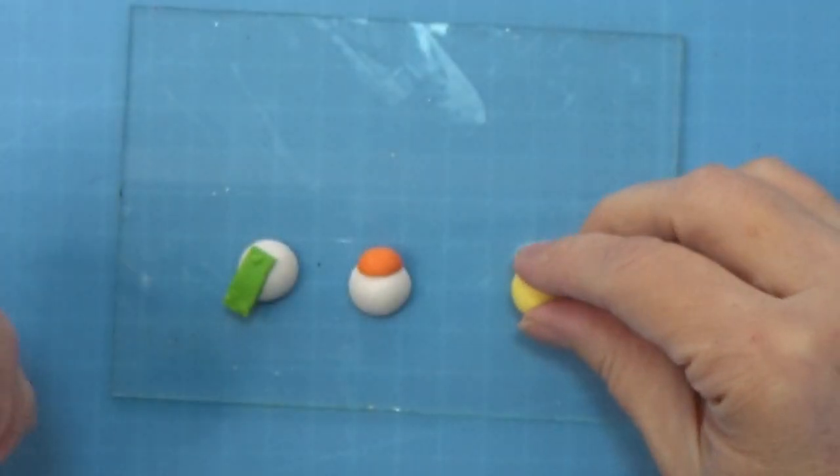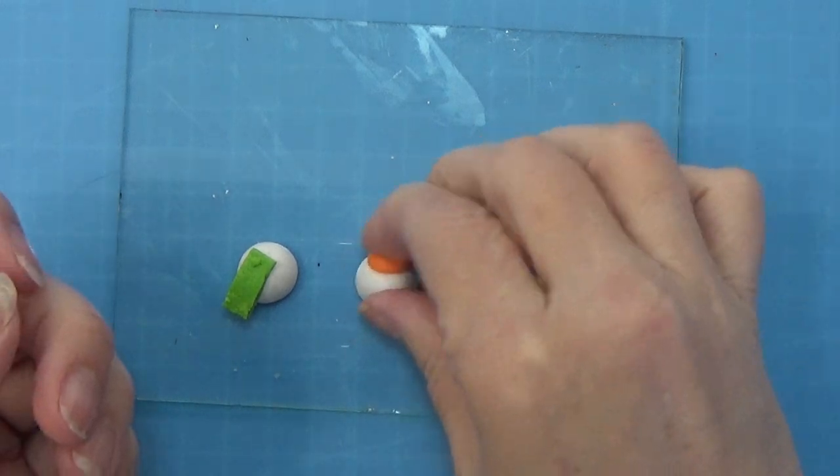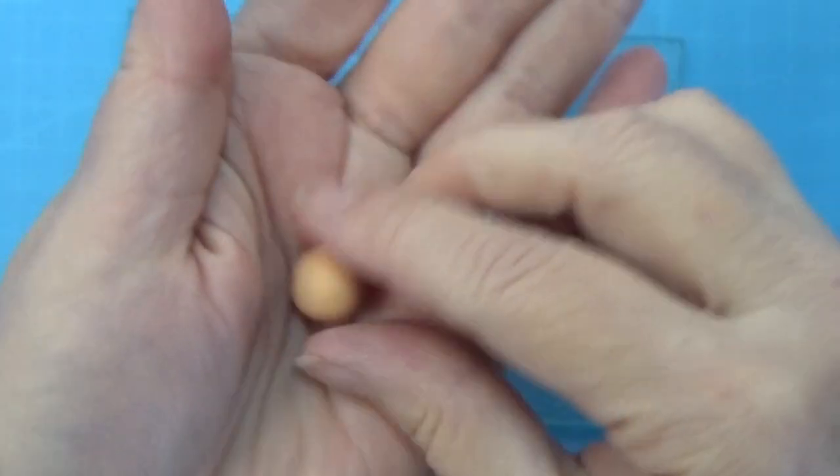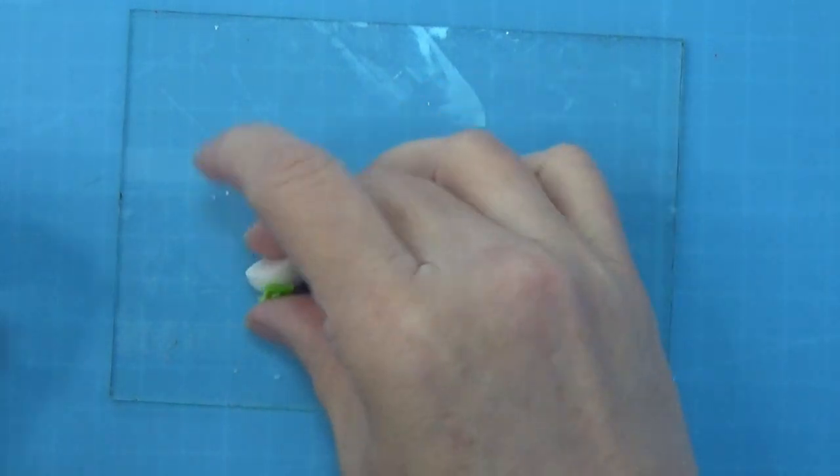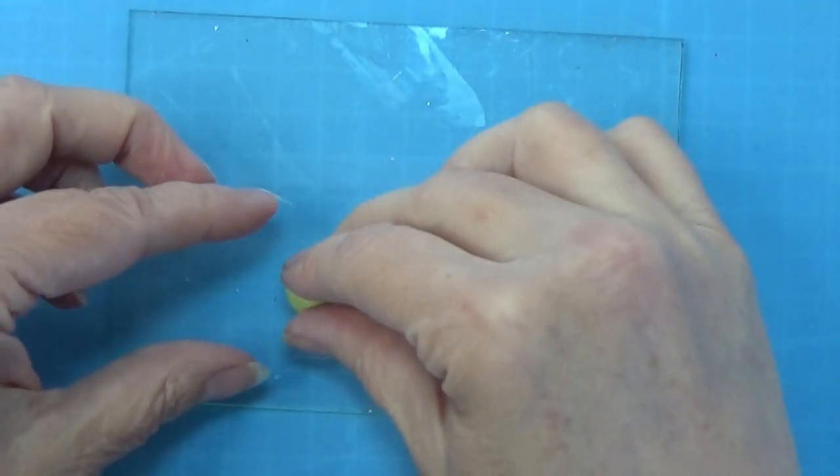And then we just go mix, mix, mix, mix. And we have a nice yellow color. And orange. Mix, mix, mix, mix. And we have a nice light orange. And the green. Mix, mix, mix, mix. And we have a nice light green. So I have all together five colors now. So remember that was the two first that I just used as they were.